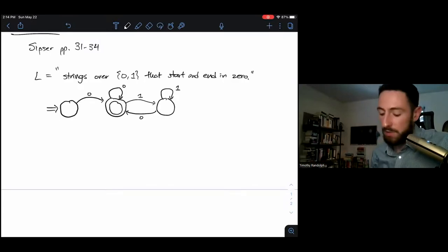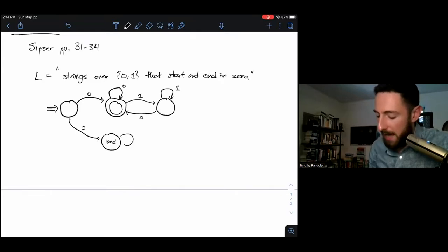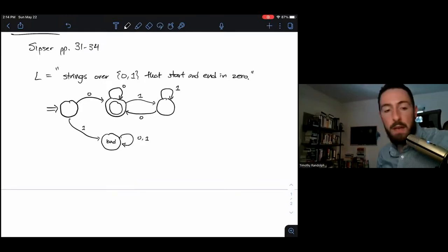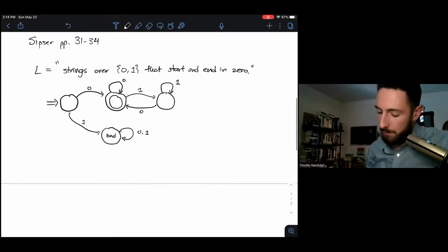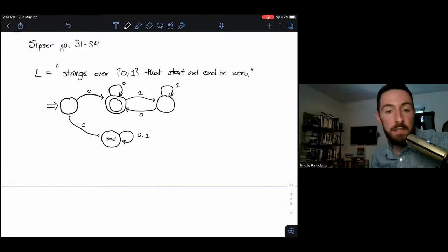I've left out one thing, which is what I do if my string starts with a one. In that case, I will move us down here and create a state that I'll call bad, from which we cannot escape. As long as we're in state bad, we read in a zero or read in a one, we stay in state bad. So this is our DFA.